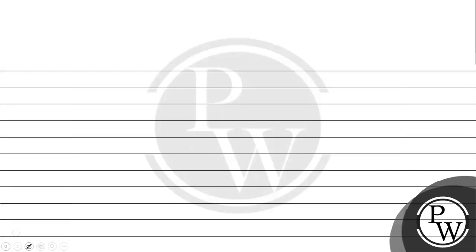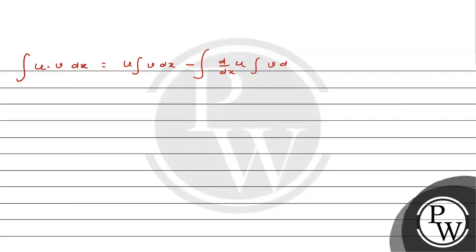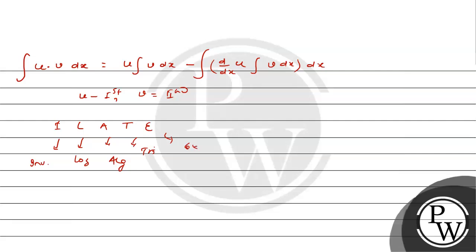One more key concept is integration by parts: ∫u·v dx = u·∫v dx − ∫(d/dx of u · ∫v dx) dx, where u is the first function and v is the second function. The choice of first function follows the ILATE rule: I for inverse, L for logarithmic, A for algebraic, T for trigonometric, and E for exponential.